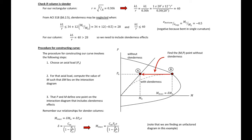Our first step is to check whether our column is slender. We'll need to find our KL/r, our slenderness ratio, and compare it to the slenderness ratio limits for a non-sway column found in ACI. For a rectangular section, R = √(I/A) = 0.3H. So our expression becomes KL/(0.3H). Our K factor is 1 for a pin-pin column, our column length is 20 feet converted to inches (×12), divided by 0.3 times 20 inches, giving us KL/r = 40.